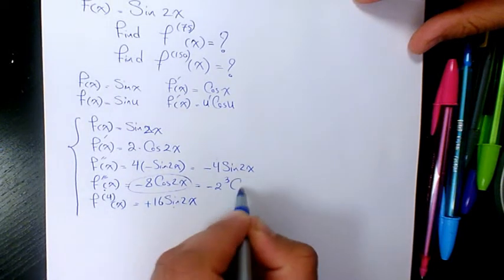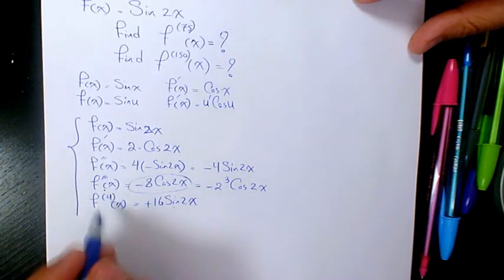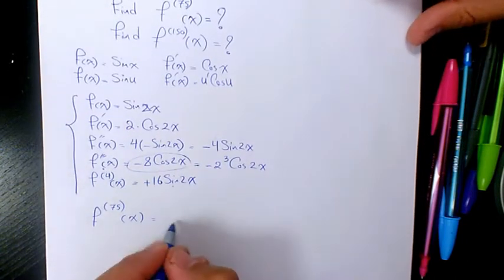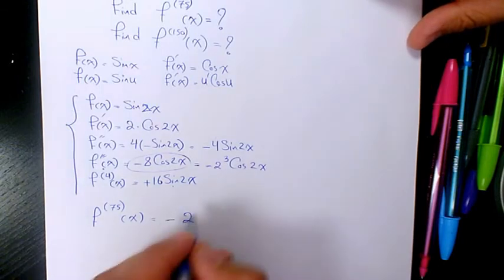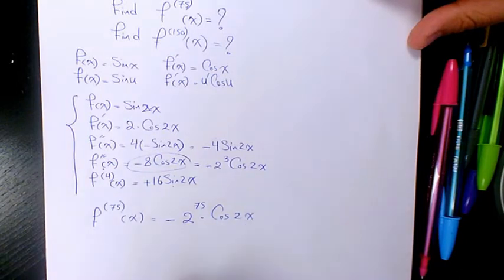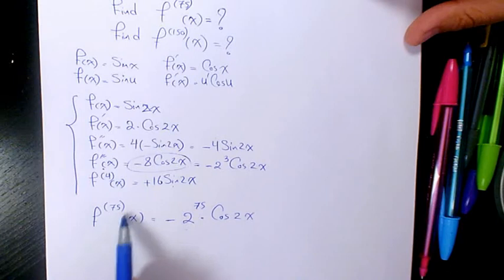It means that f of 75th of x is going to be negative 2 to the power of 75 cosine 2x. So that's going to be the 75th derivative of this function.